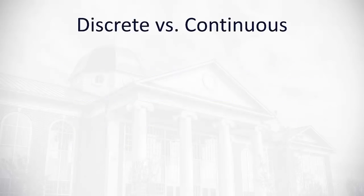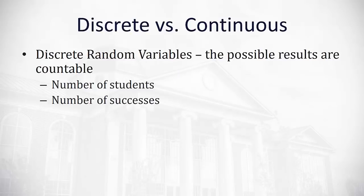First, we need to make sure we understand the difference between discrete and continuous. A discrete random variable is a variable where the possible results are countable. Often we're interested in the number of things, such as the number of students or the number of successes. We can count those. That is discrete.